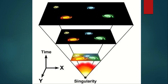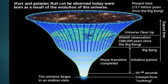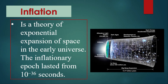That singularity then expanded — it underwent an extremely rapid expansion which we call inflation. From the singularity, inflation happened. It rapidly expanded and developed into the universe that we know today. Inflation is a theory of exponential expansion of space in the early universe. The inflationary epoch lasted from 10 raised to negative 36 seconds — so in a tiny fraction of a second, inflation happened.